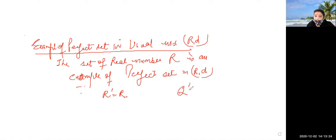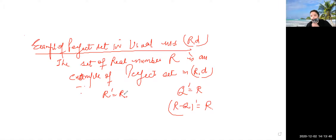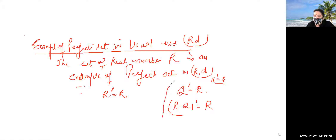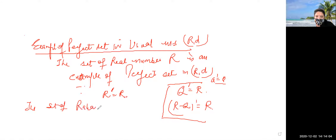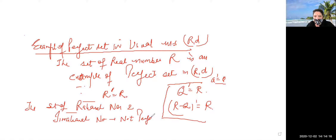Consider Q: Q-dash equals R, and R minus Q-dash also equals R. Every point in the real line is a limit point, so R-dash equals R. But Q-dash equals R, not Q, so the set of rational numbers is not a perfect set. Similarly, the set of irrational numbers is also not a perfect set.